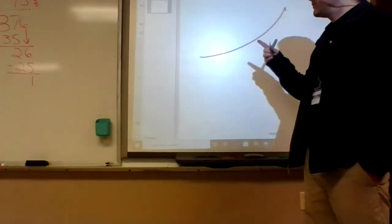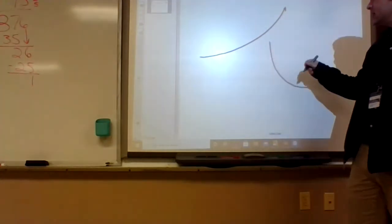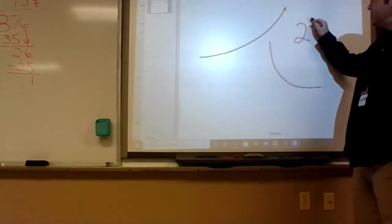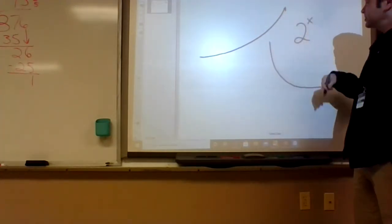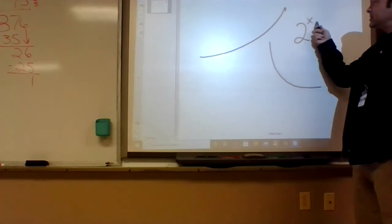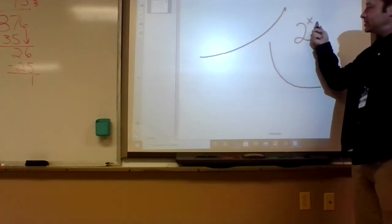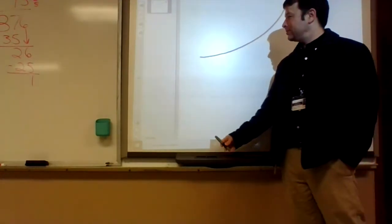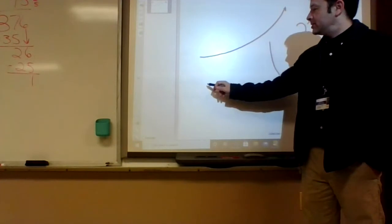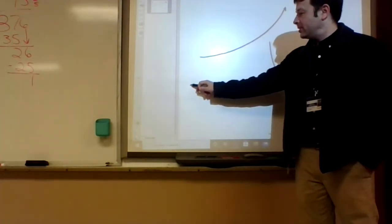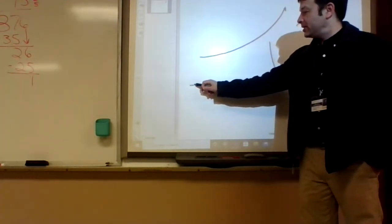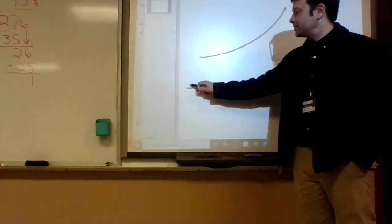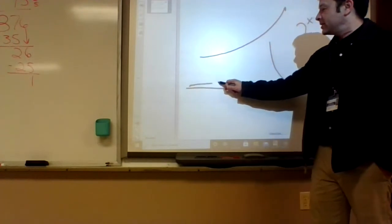If everybody's doubling, it gets faster and faster as it goes up. So if every generation doubles, that would be like 2 to the x, where x stands for the generation. That's why population can grow so quickly.